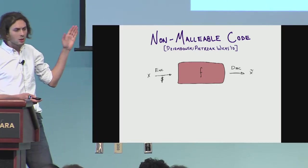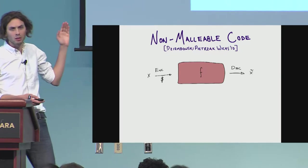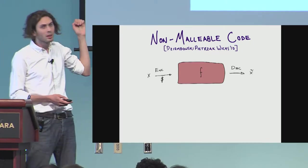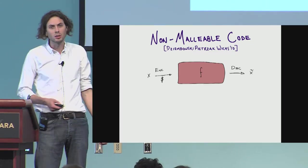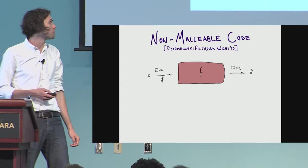A non-malleable code is a coding scheme and we're going to think about this experiment. You take a message, you encode it, then you put it through this F, which is a tampering function. You decode the tampered code word and you output what you get.